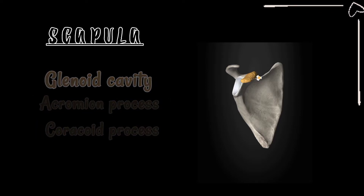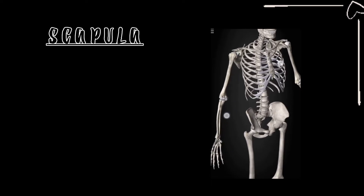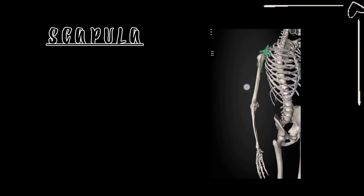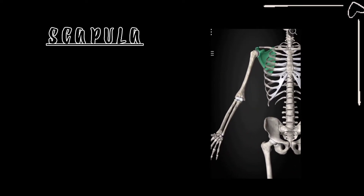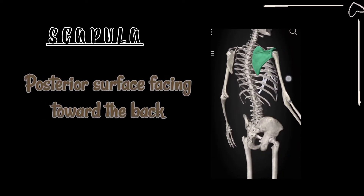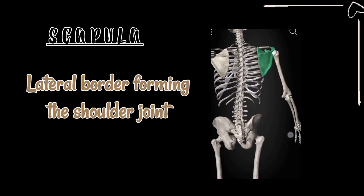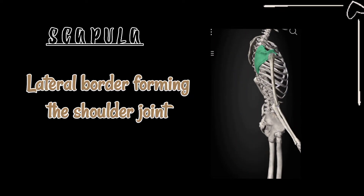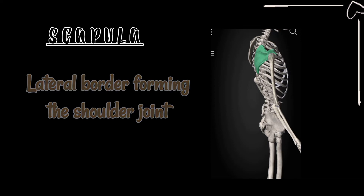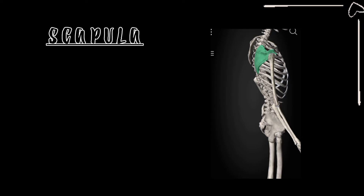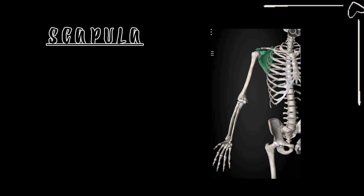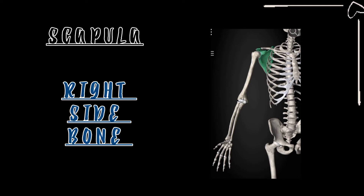Placing the scapula bone back into the skeleton gives a clearer view. The costal surface faces toward the ribcage. The posterior surface, having the spine of the scapula, faces posteriorly to provide muscle attachment. The lateral border has the glenoid cavity, along with the acromion process and coracoid process, which together make up the shoulder joint. The glenoid cavity of the scapula articulates with the head of the humerus to form the shoulder joint.